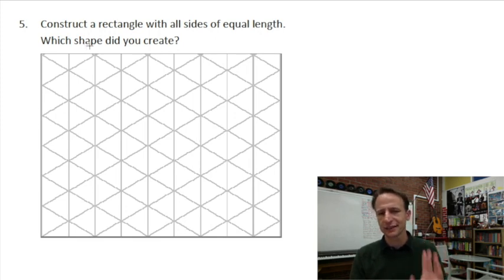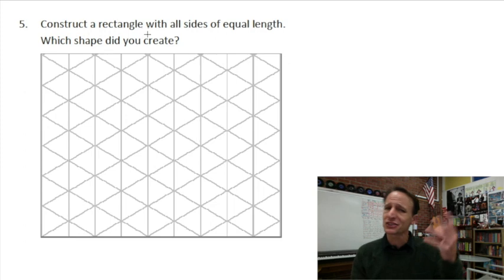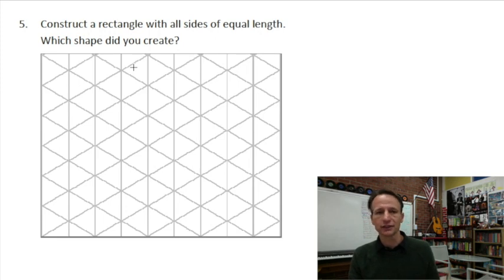Number five: construct a rectangle with all sides of equal length. This has a little trick to it - if you're going too fast, not thinking, you might mess it up. Even though it says just construct a rectangle, we're not making just a rectangle. We're making that specialized rectangle that has all sides of equal length. Yes, I knew we just drew one of these in number four, but here we are at number five doing it again.